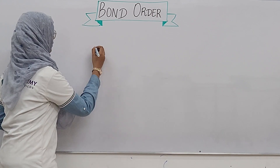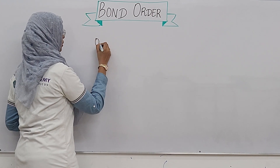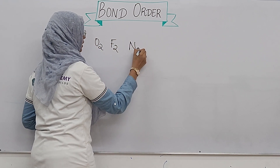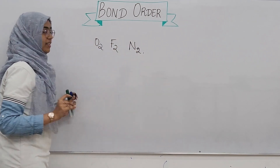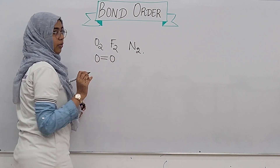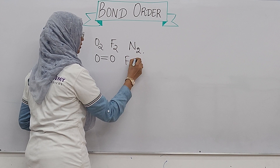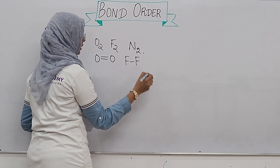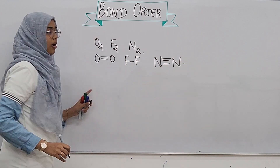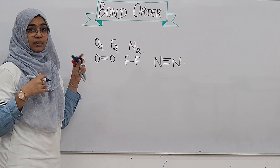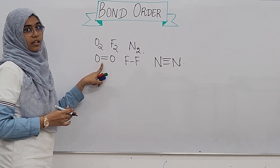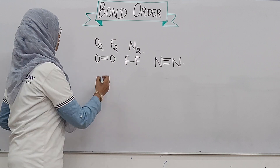In general, we have O2, F2, and N2 as specific species. O2 is a double bond, F2 is a single bond, and N2 is a triple bond. So if we have two atoms in a molecule with two bonds, that is the bond order.